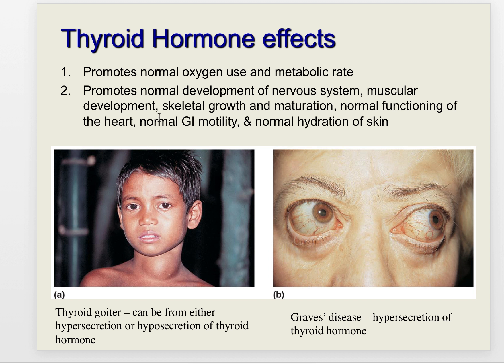Thyroid hormone promotes normal oxygen use and metabolic rate, and is needed for normal development of the nervous system, muscular development, skeletal growth, maturation, normal heart function, normal GI motility, and normal skin hydration. A goiter can occur from either hyposecretion or hypersecretion of thyroid hormone, resulting in a swollen thyroid gland. Graves' disease comes from overproduction of thyroid hormone; its main symptom is exophthalmos, where the eyeballs appear to protrude due to fat accumulation behind them.